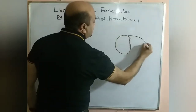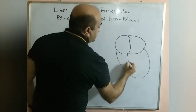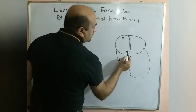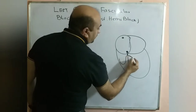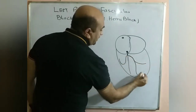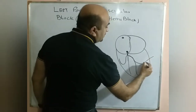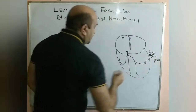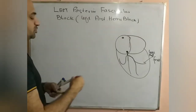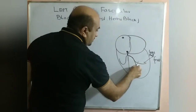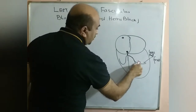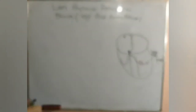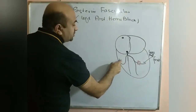To illustrate with a diagram: after the AV node, there is the bundle of His, which gives the right bundle branch, septal branch, and left bundle branch. The left bundle branch divides into the left posterior fascicle and left anterior fascicle. When there is a block or obstruction at the level of the left posterior fascicle, the impulse cannot pass through it, but will pass normally through the left anterior fascicle, right bundle branch, and septal branch.